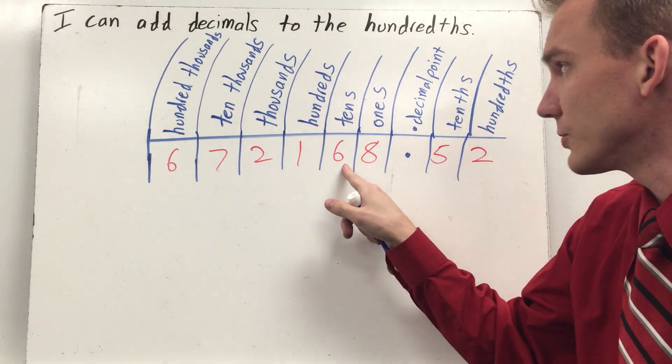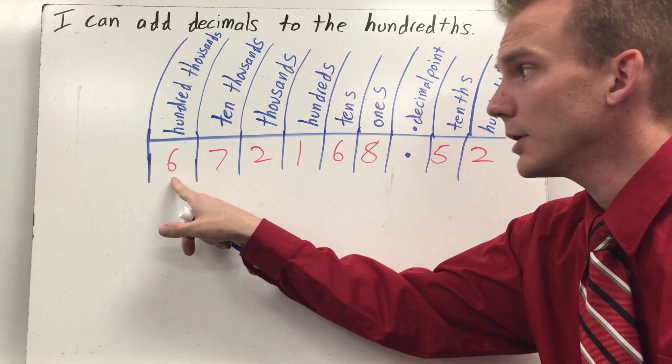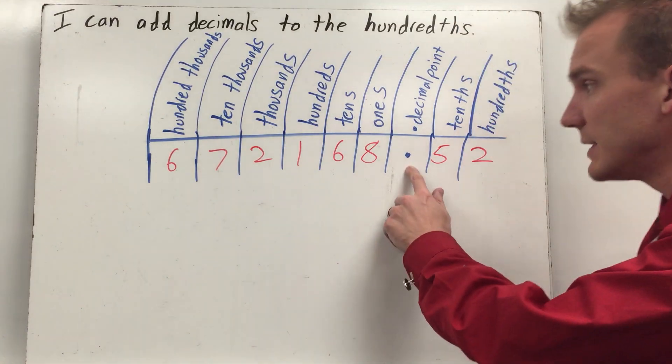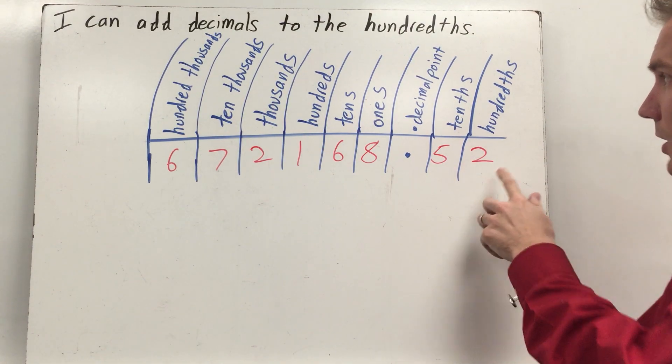In place value, you have your ones, tens, hundreds, thousands, ten thousands, and hundred thousands. But you also have the decimal point, and then to the right of your decimal point you have your tenths and hundredths.